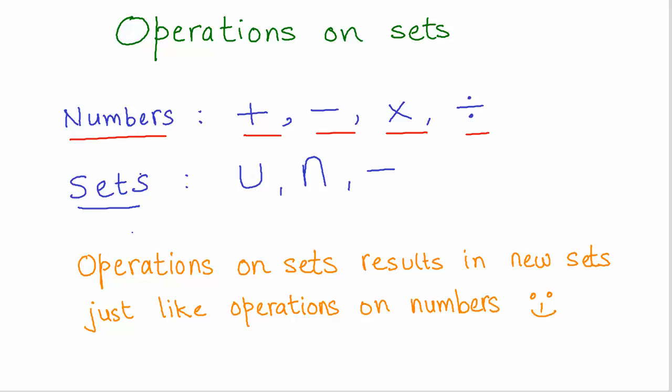We also learned about properties of different operations on numbers. For example, when we learned addition, subtraction, division, and multiplication, we looked at commutative property, associative property, and so on.